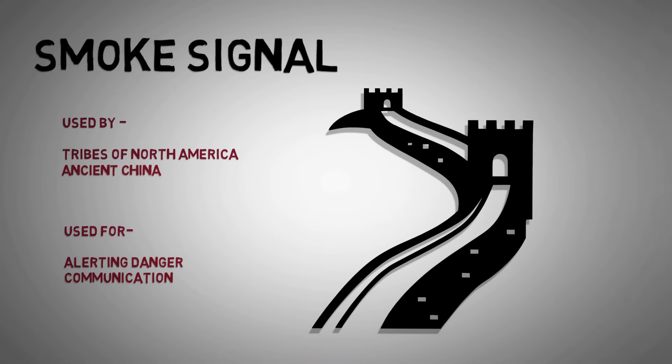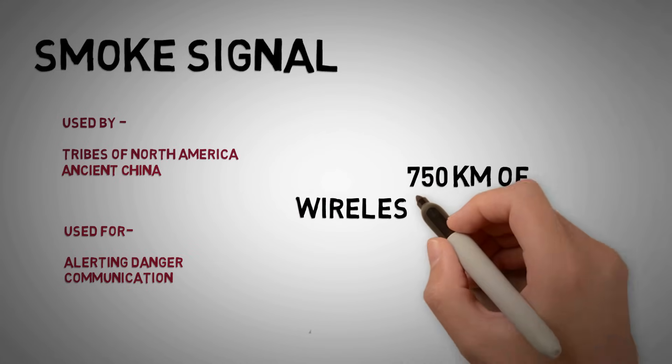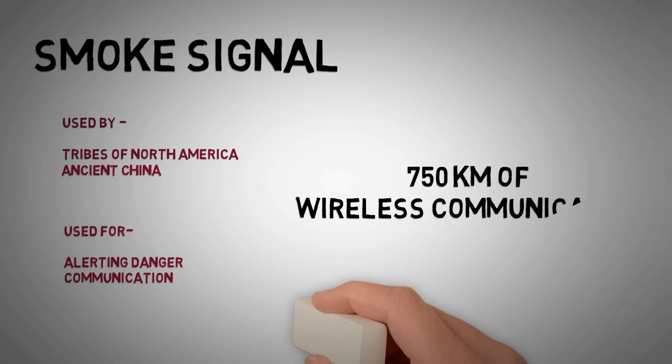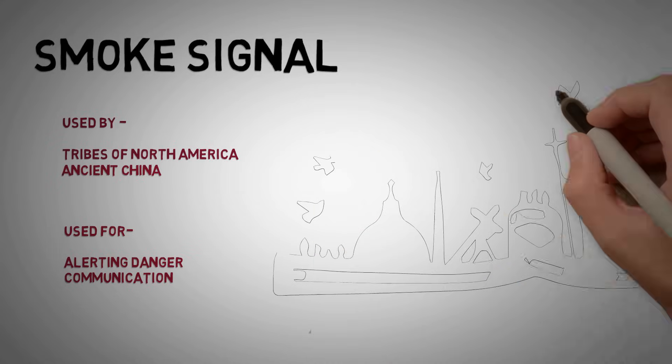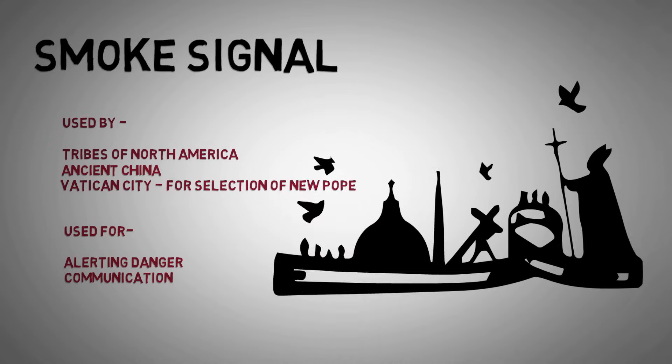In this way they could transmit messages as far as 750 kilometers within a few hours. The smoke signal is still used in Vatican to indicate the selection of a new pope.